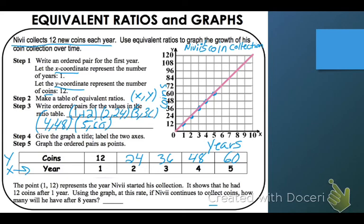Well, you notice I created that line, right? I created that straight line. So all I have to do is look at 8 years, go up, and it looks like I would have 96 coins. So the answer to that question is 96 coins.